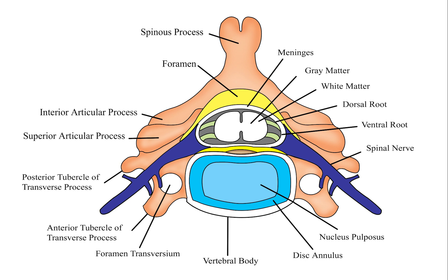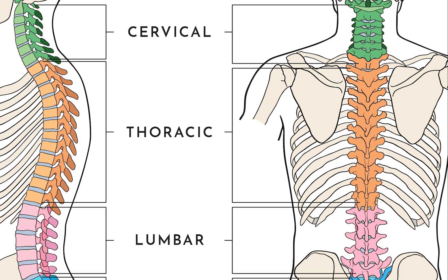The vertebral column is the defining characteristic of the vertebrate endoskeleton, in which the notochord — a flexible collagen-wrapped glycoprotein rod found in all chordates — has been replaced by a segmented series of mineralized irregular bones, or sometimes cartilages, called vertebrae, separated by fibrocartilaginous intervertebral discs, the center of which is a notochord remnant.